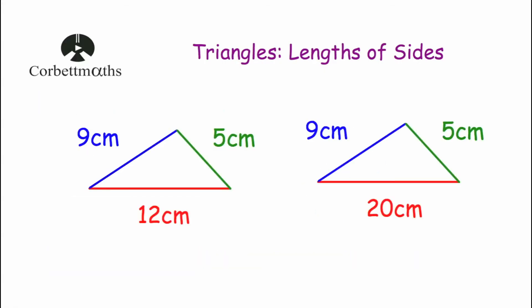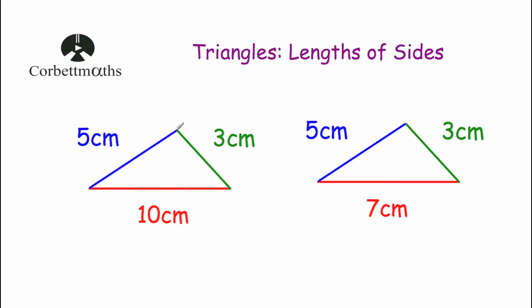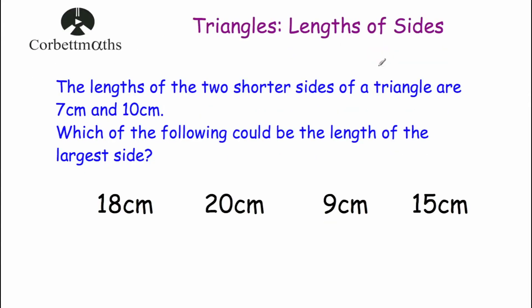Let's look at some questions to see which triangles are possible. For the first triangle, 9 + 5 = 14, so the other side must be smaller than 14 — 12cm works, so that triangle is possible. For the second, 9 + 5 = 14, but the side is 20, which is too big, so that triangle is impossible. For the next pair, 5 + 3 = 8, but the side is 10 — too large, so that triangle is impossible. The other triangle has a side smaller than 8, so it is possible.